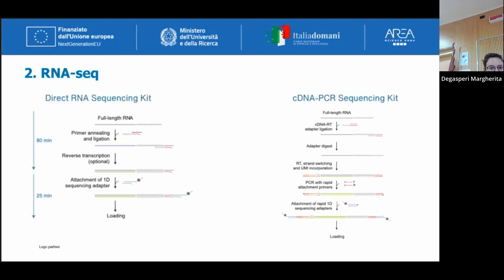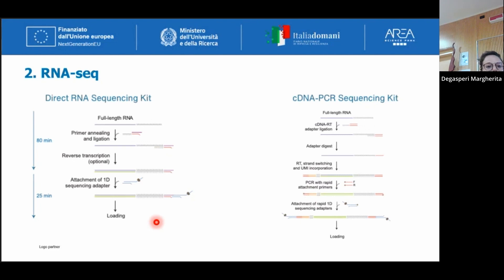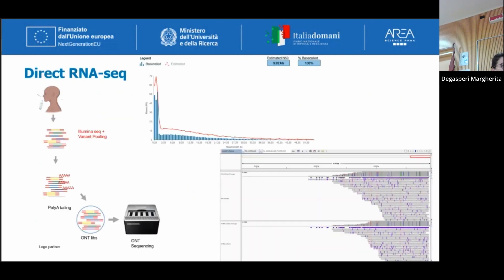Oxford Nanopore has also developed two workflows for RNA-seq: the direct RNA-seq kit and the cDNA sequencing kit. The cDNA sequencing kit requires conversion of RNA to cDNA and may or may not include a PCR step. The most interesting is the direct RNA sequencing kit, which enables sequencing of naive RNA molecules. The input material for the protocol is polyadenylated RNA, and only naive RNA can pass through the pore. This is very important because it enables detection of all modifications along the RNA — across the exome, untranslated regions, 3' and 5' modifications, and poly-A tail length, which is connected to mRNA stability in the cell.